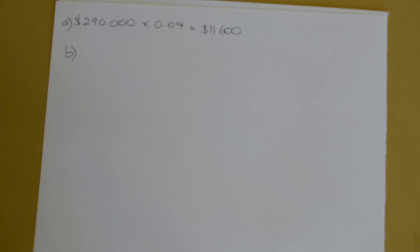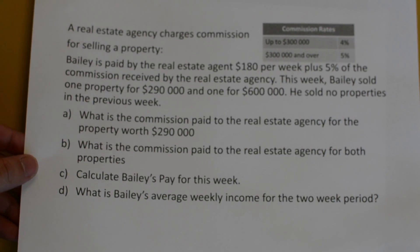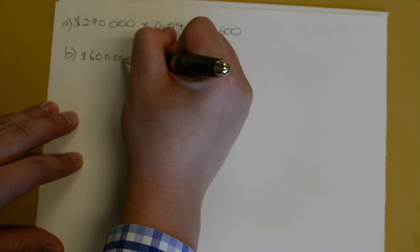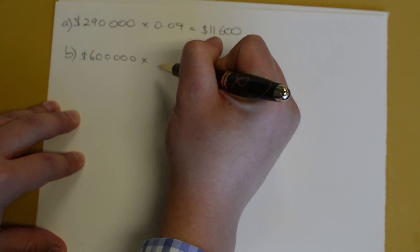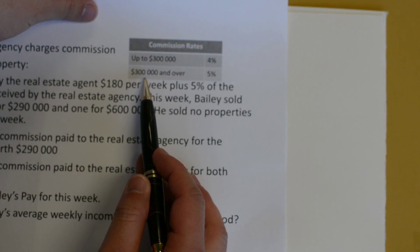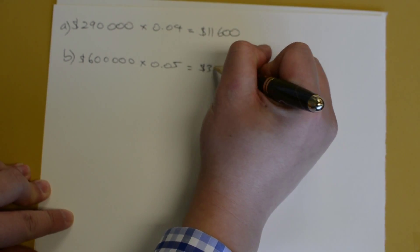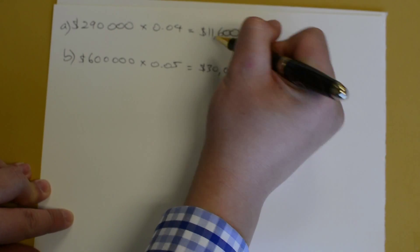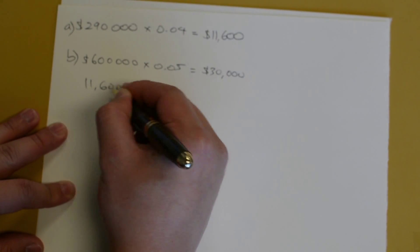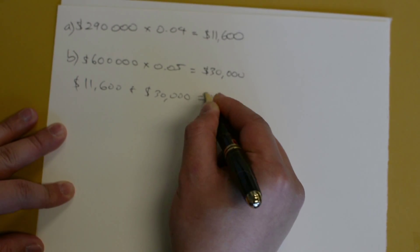Part B asks: what is the commission paid to the real estate agency for both properties? We've already found the $290,000 one, so now we need the $600,000 one. Since $600,000 is over $300,000, the table tells us to use 5%. So 5% of $600,000 gives us $30,000. Together, the two properties give $11,600 plus $30,000, which is $41,600.